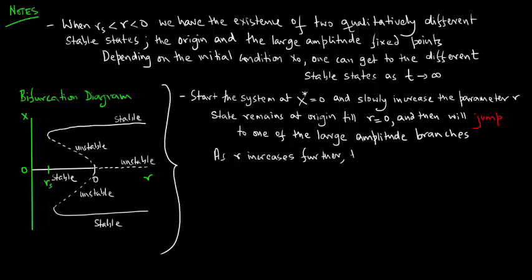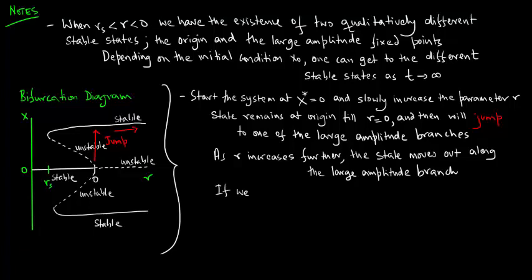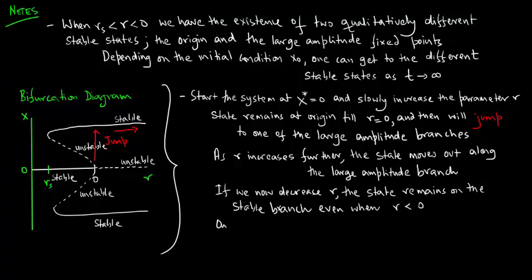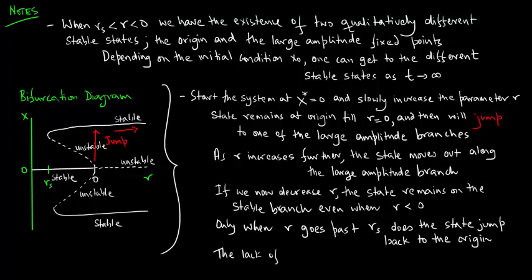If we now decrease the parameter, the state remains on the stable branch even when r goes past zero. It is only when r actually goes past rs does the lack of reversibility show up. This lack of reversibility as a parameter is varied is called hysteresis.